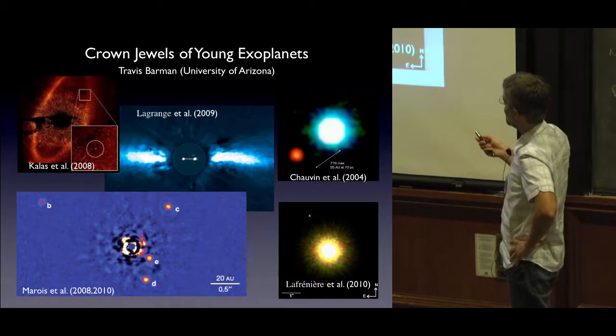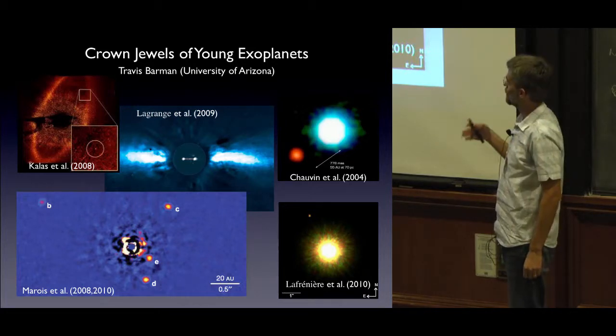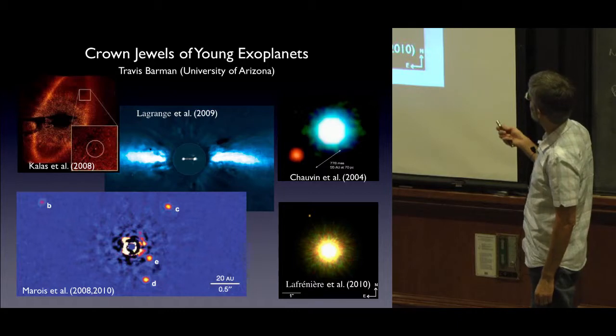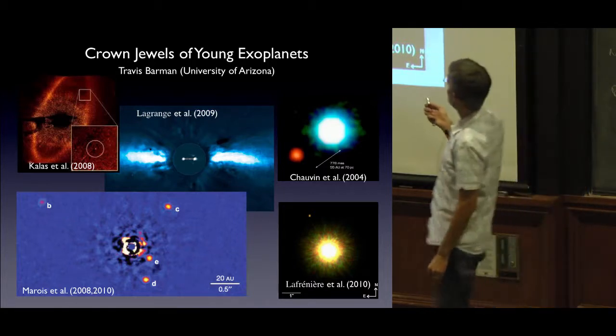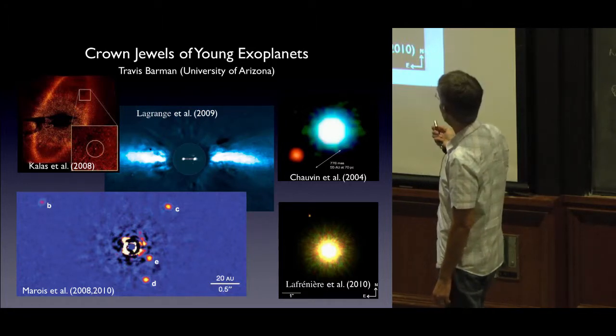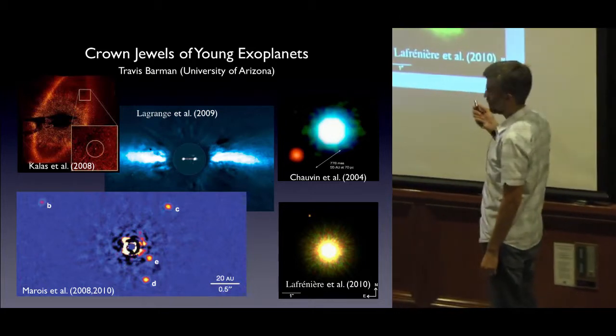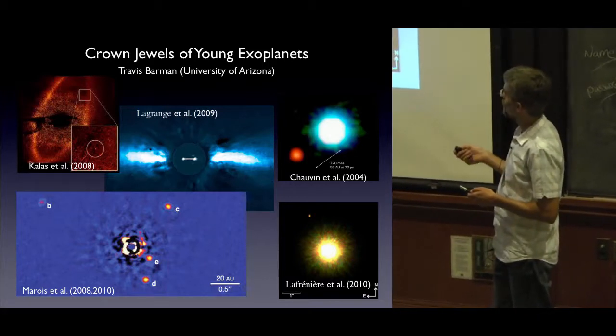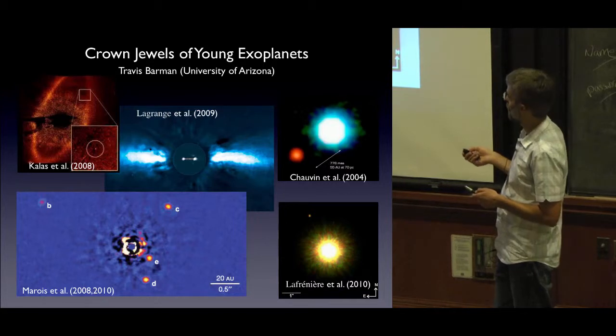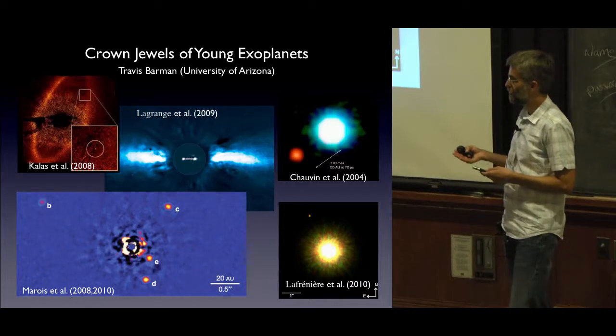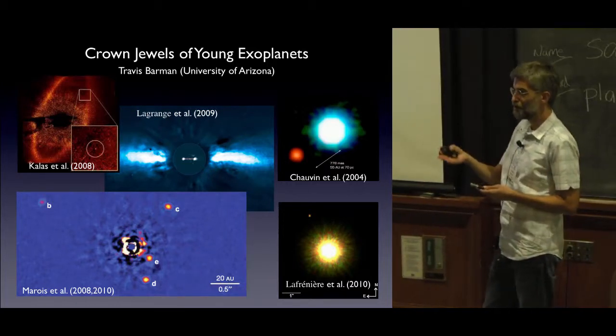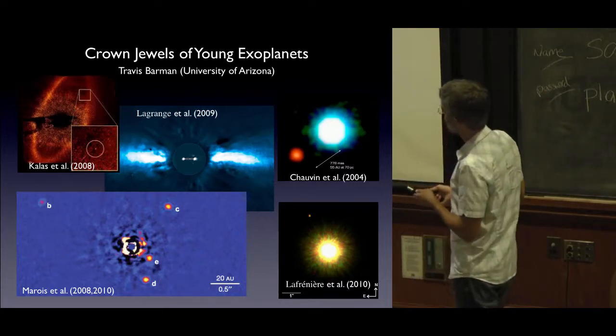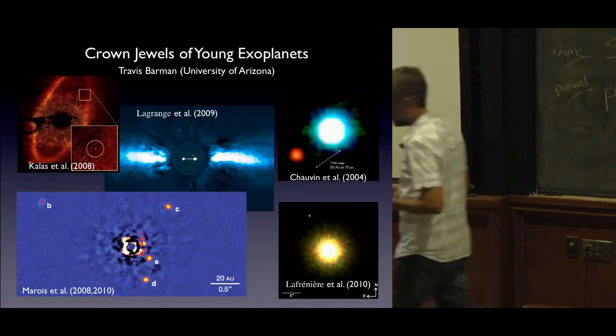I'm going to really focus on not so much what the surveys have told us—Beth just covered that—but I'll use primarily the HR8799 planets because they've been studied so carefully, and 2M1207b, which often doesn't get a lot of press anymore, but was one of the early planetary mass companions found around a young brown dwarf. But we've learned a lot about young giant planet atmospheres from that object.